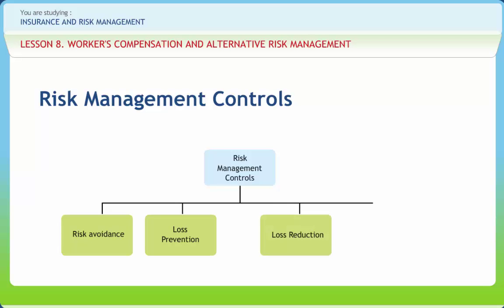Loss reduction to reduce the severity of those losses which do occur. Separation or diversification of loss exposures to reduce concentrations of values subject to a single accident and to make aggregate losses more predictable — an example is the development of an organized approach by a facility to handle the workers' compensation program to include such programs as committees, incident investigations, light duty positions, working with medical and legal personnel, etc. Utilization of non-insurance transfers which rid the organization of any responsibility for the loss.